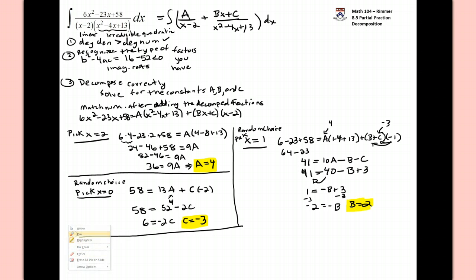Now let's try to tackle the calculus that goes into integrating what our result is: 4 over x minus 2 plus 2x minus 3 all over x squared minus 4x plus 13. This is supposed to be something that we can integrate. And we definitely will be able to integrate this 4 over x minus 2. We'll be able to integrate that. And let's go to the next slide to see how we're going to deal with this 2x over this irreducible quadratic.